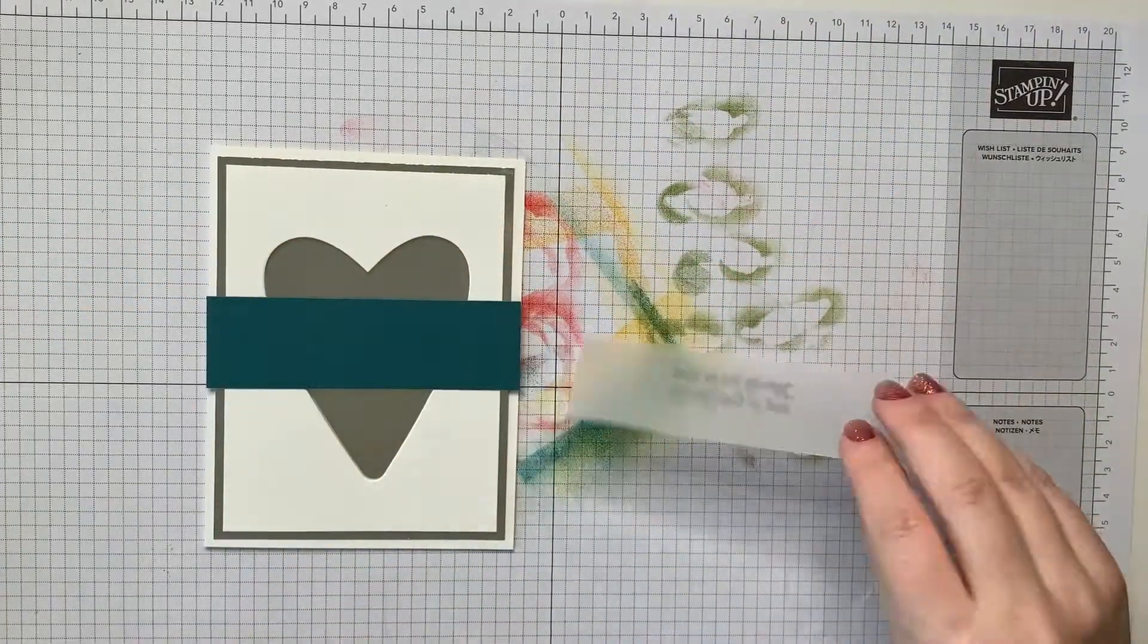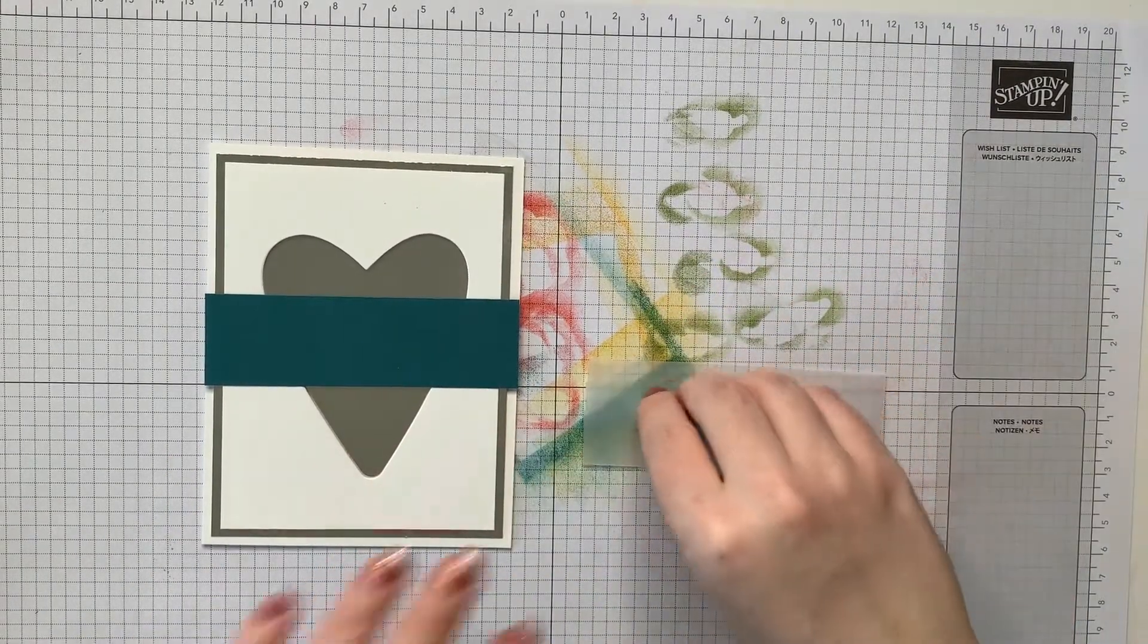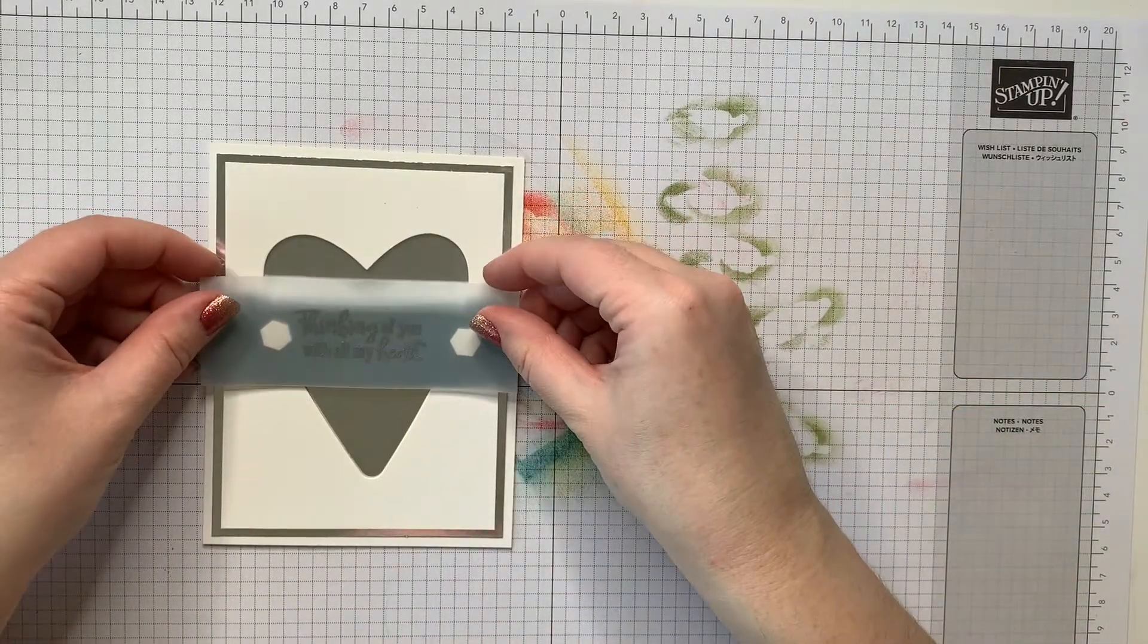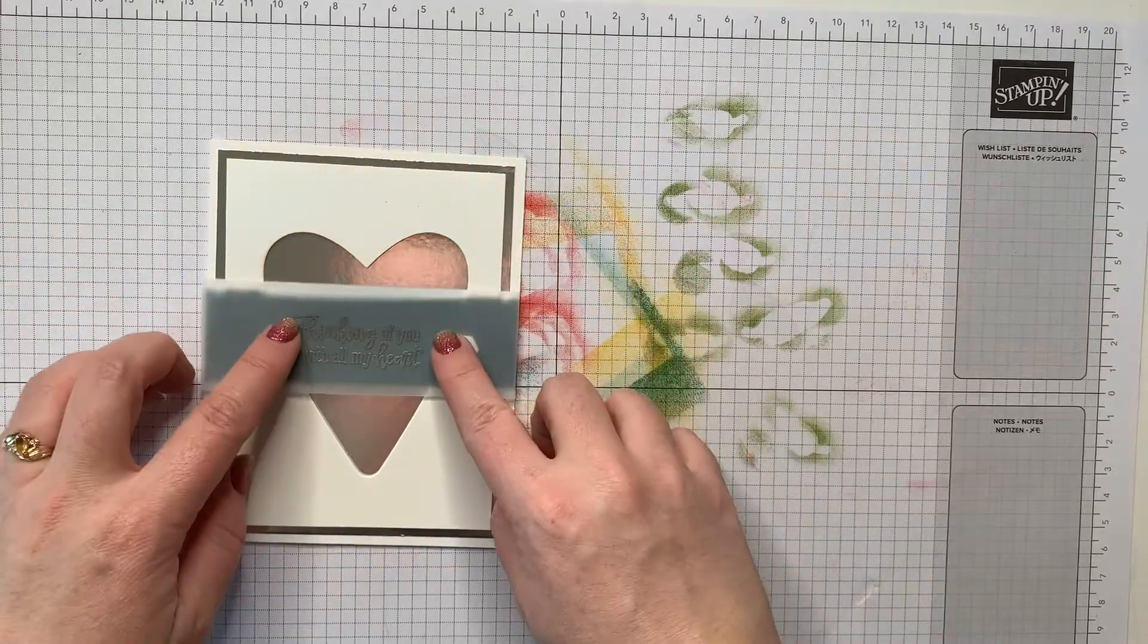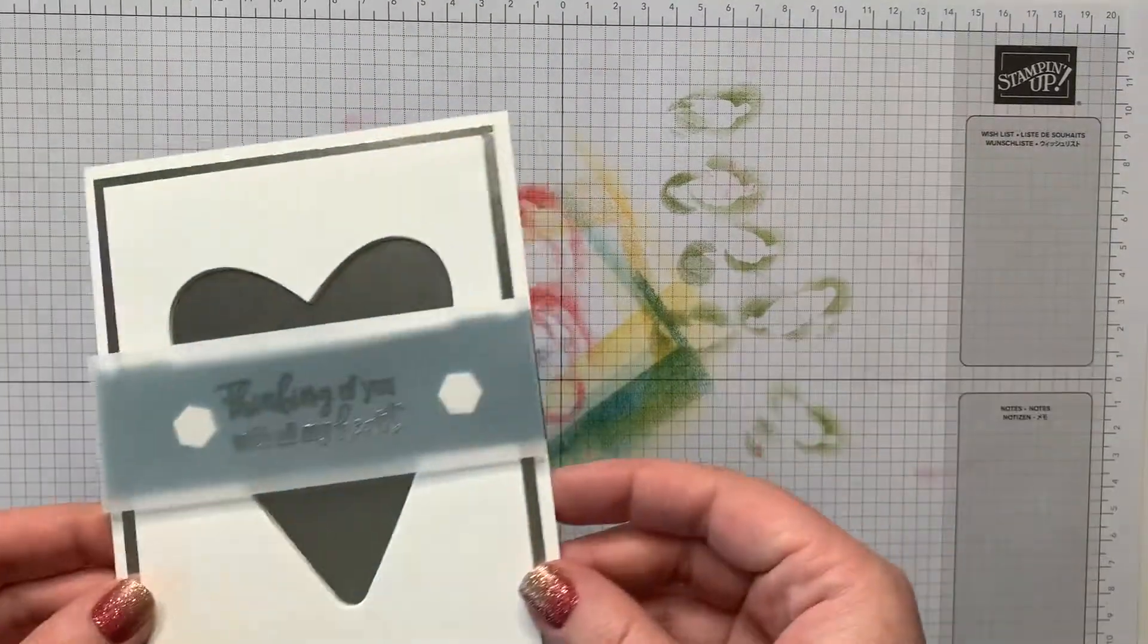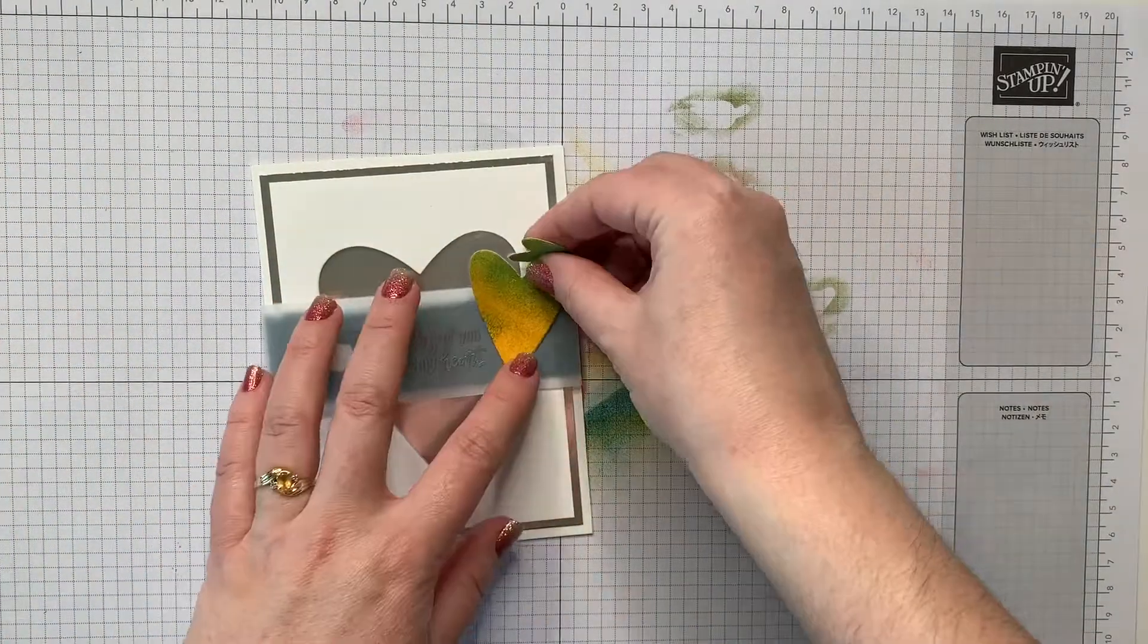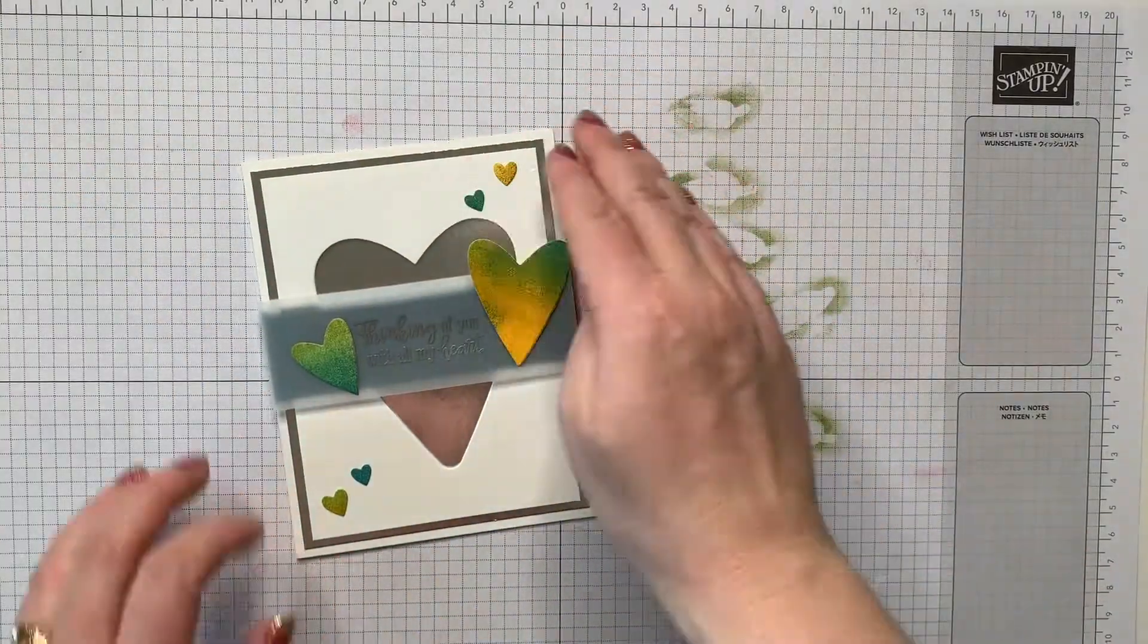To adhere the vellum strip onto the front of my card I decided to use some dimensionals. Yes, you can see them on the other side of the vellum however I knew that I was going to use my cutout hearts to cover them up so when you're making this card just be sure that you are placing them very strategically so that when you go to cover them up you have enough room and your sentiment doesn't get covered up as well.